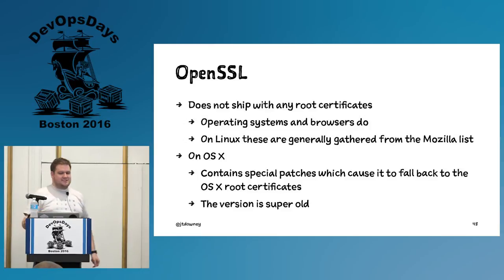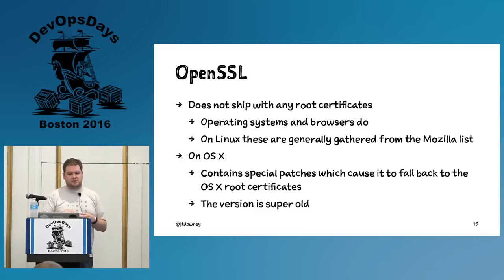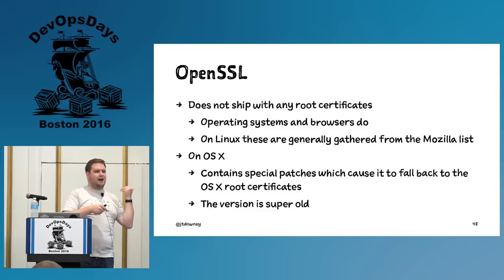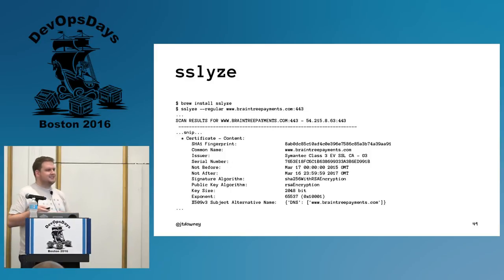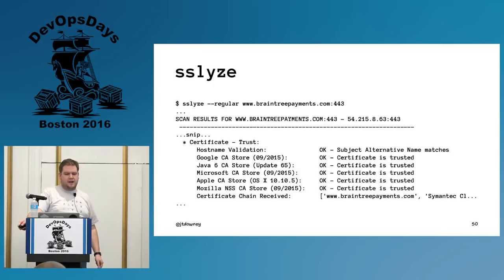Something to know about OpenSSL: it doesn't ship with root certificates. This confuses people because they expect an SSL library to have them, but OpenSSL prefers the operating system and browsers to handle this. On Linux, your distro will probably ship with roots from Mozilla. On OSX, the version of OpenSSL is specially patched to fall back to the OSX keychain store — though the version of OpenSSL on OSX is super old. Don't use it. The next thing I reach for is SSLyze — a great tool that shows a bunch of information about supported ciphers. It's a command-line tool so you can run it behind your bastion host for internal services. It can also dump out whether a certificate would be in certain CA stores.